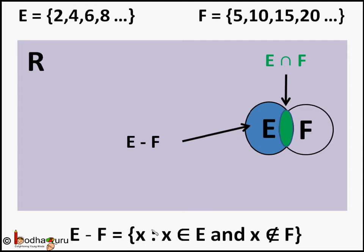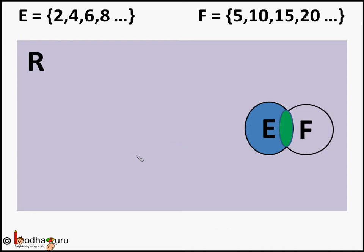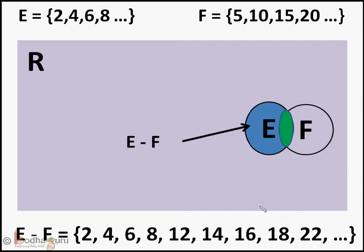Means the elements of E minus F set are even numbers which are not multiples of 5. So E minus F set includes numbers like 2, 4, 6, 8, 12, 14, 16, 18, 22 and so on.